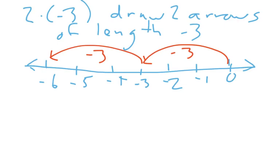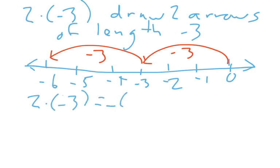Two times negative three equals negative six. Multiply a positive number by a negative number and you get a negative number.